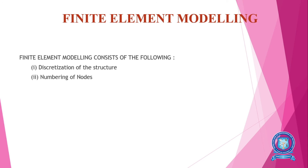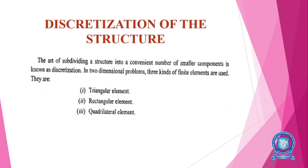The next topic is finite element modeling. It consists of two main things: one is discretization of the structure and the second is numbering of nodes. Discretization is the art of subdividing a structure into a convenient number of smaller components. In two-dimensional problems, three kinds of finite elements are used: triangular element, rectangular element, and quadrilateral element.